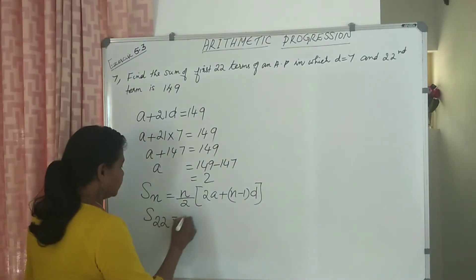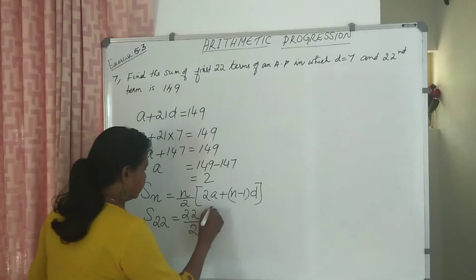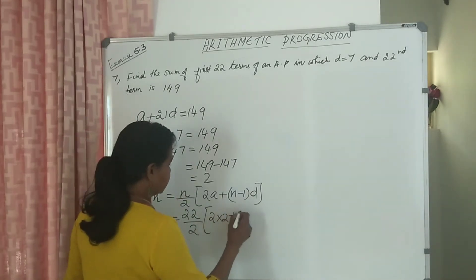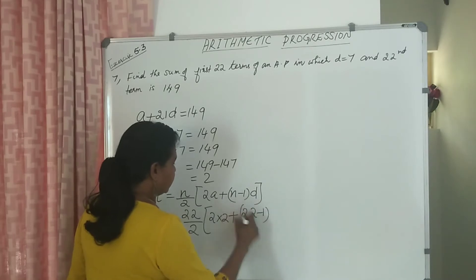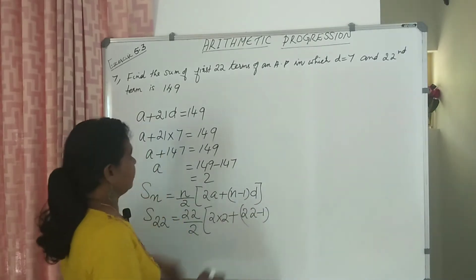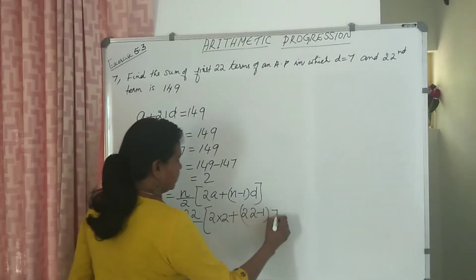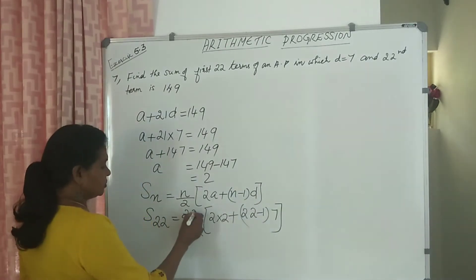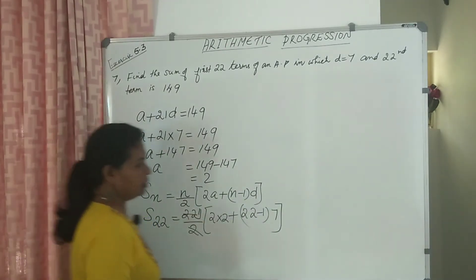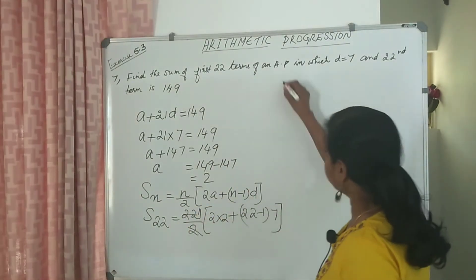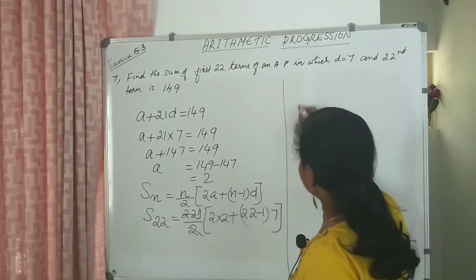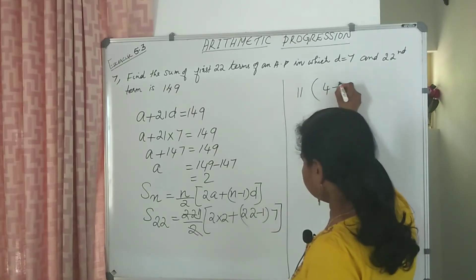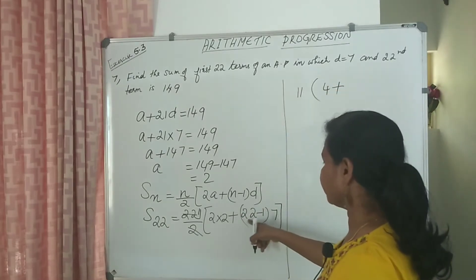S22 equal to 22 by 2 into 2 into A. Here A is 2, plus 22 minus 1 into D is 7. Simplify: 22 by 2 gives 11. So we get 11 into 2 into 2 into 4 plus 21 into 7.